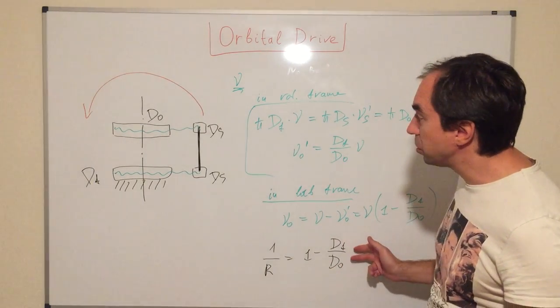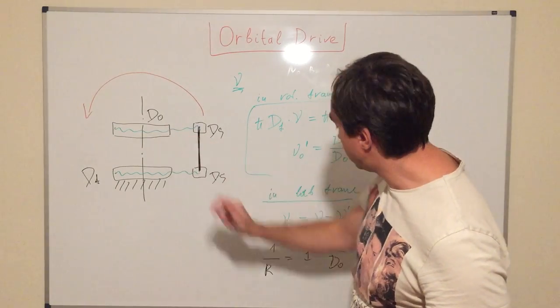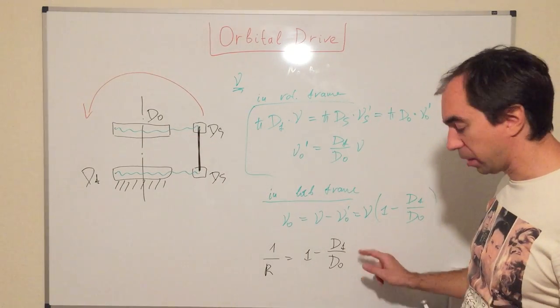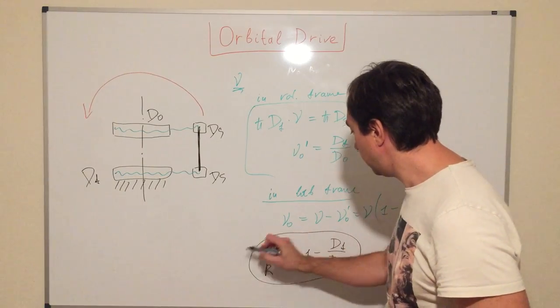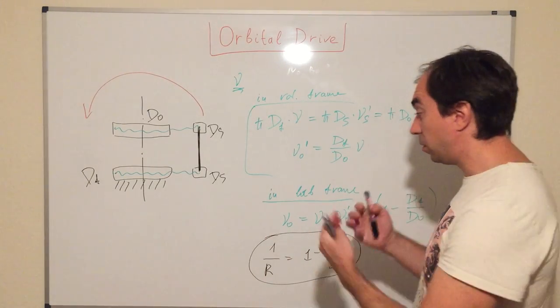Thus, if there is a small difference between the diameter of these two pulleys, in this case, we're going to have a huge reduction ratio. This is the main principle.